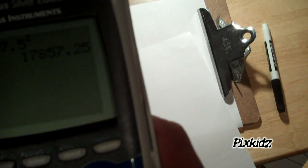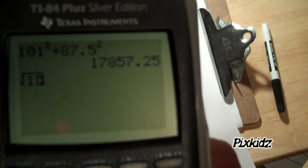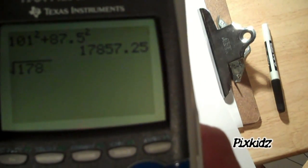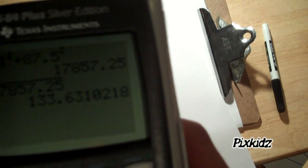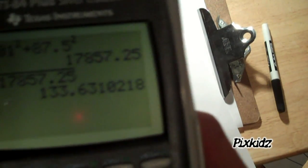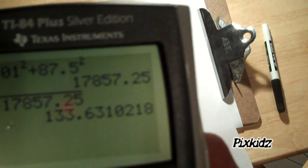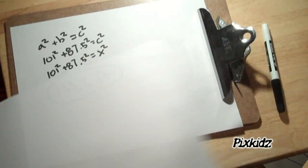We'll do square root 17,857.25 equals 133.6310218, which we can reduce to approximately 133.6 feet.